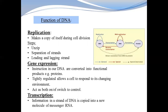One strand at the replication fork moves in the 3 to 5 direction — we call this the leading strand. The second strand is the lagging strand, which moves away from the replication fork.